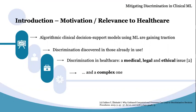Simple solutions such as just removing the sensitive attributes or creating separate models for segregated groups are naive approaches, and this calls for a more complex solution. As the black box nature of many machine learning models disguises the influence of sensitive attributes on final decision outcomes, further complications arise. In addition, trying to optimise both model performance and fairness often results in one being improved at the detriment of the other.